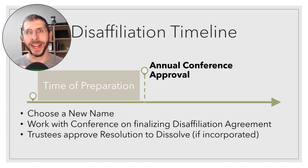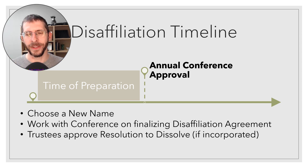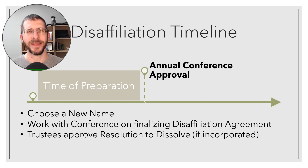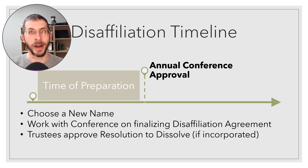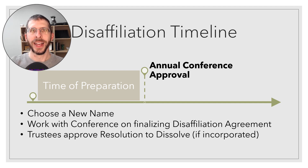As you'll see in the disaffiliation agreement, if your church entity is incorporated, you need to close it and start a brand new non-profit corporation. If your church isn't incorporated, I'd encourage you to incorporate — it makes sense for many legal reasons. Your trustees should make a resolution to dissolve, and I'll provide a template for that. In the resolution, name the new church as the successor so it will inherit all your assets and debts.